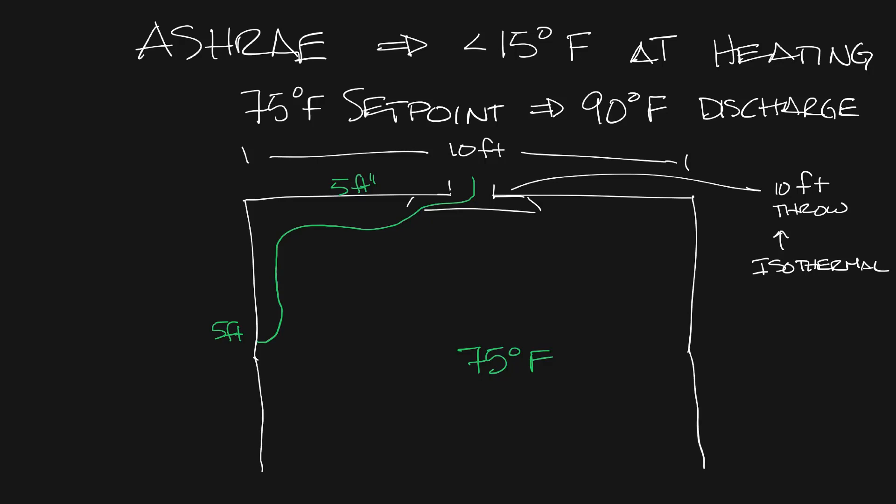So in cooling, cold air will throw a little longer. So with 55 degrees supply air, this 10 foot diffuser throw is actually going to be 14 foot throw in cooling, so now it's going to come in here, go around, and go down about nine foot down the wall.